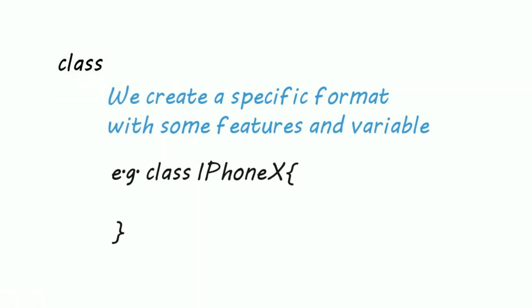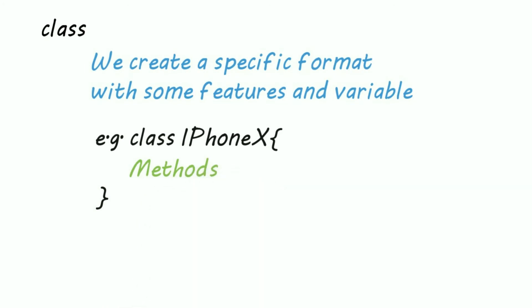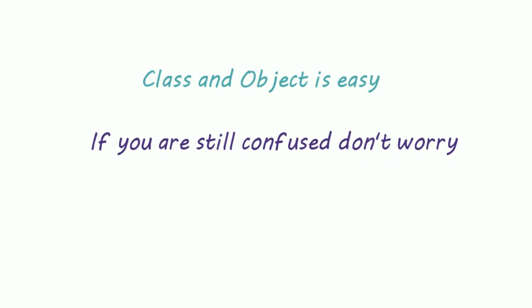Features are like our methods. So to use these functionalities we need to create objects. For example, Sam and John are objects.